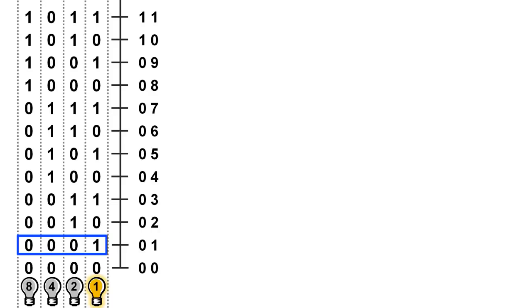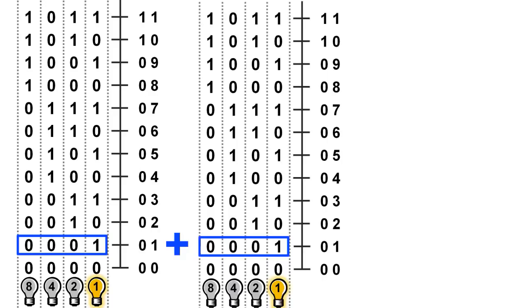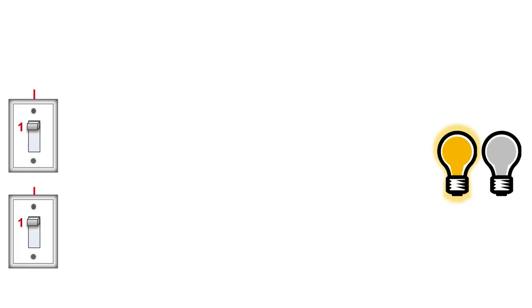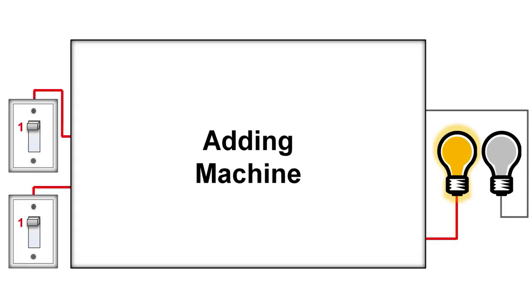So 1 plus 1 in binary equals 10, which is 2 in decimal. Since switches can also represent 1s and 0s, let's put two switches on the left and then an adding machine in the middle to see how we can do this with the logic gates we made earlier.